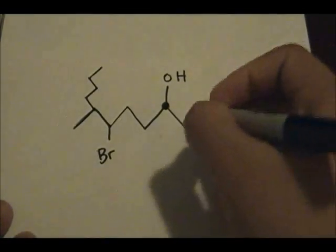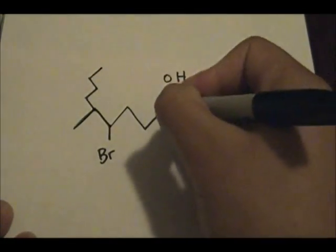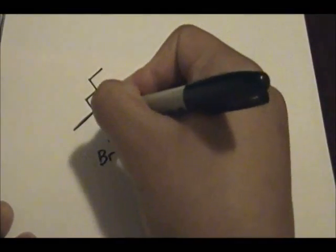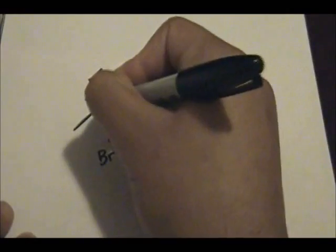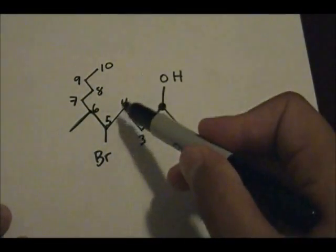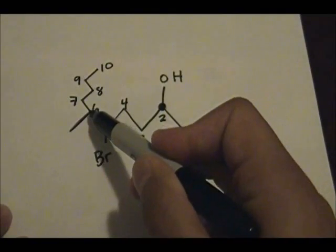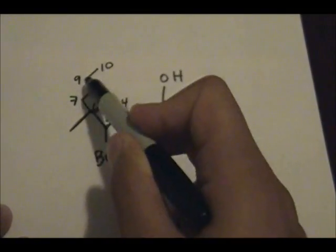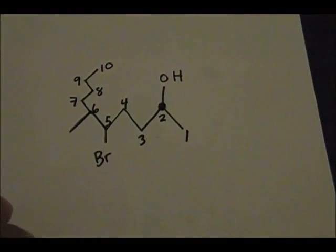Going right to left: one, two, three, four, five, six, seven, eight, nine, ten. So carbon six is at that position, seven for this carbon, eight for that carbon, nine and ten. We have numbered our parent chain and satisfied both the first and second steps.